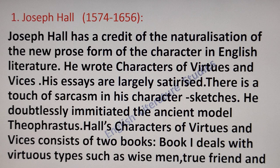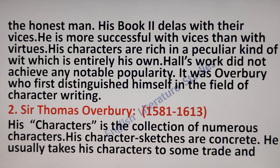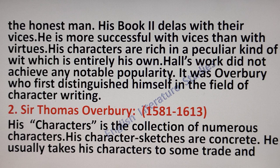Joseph Hall's Characters of Virtues and Vices consists of two books. Book one deals with virtue types such as wise men, true friend, and honest men. The second book deals with vices. He is more successful with vices than with virtues. His characters are rich in a particular kind of wit which is entirely his own. Joseph Hall's work did not achieve any notable popularity. It was Overbury who first distinguished himself in the field of character writing.